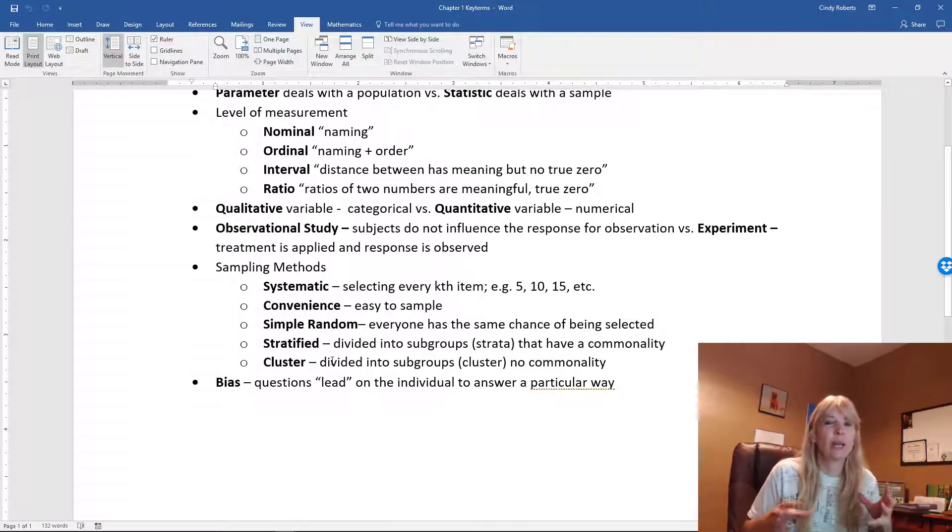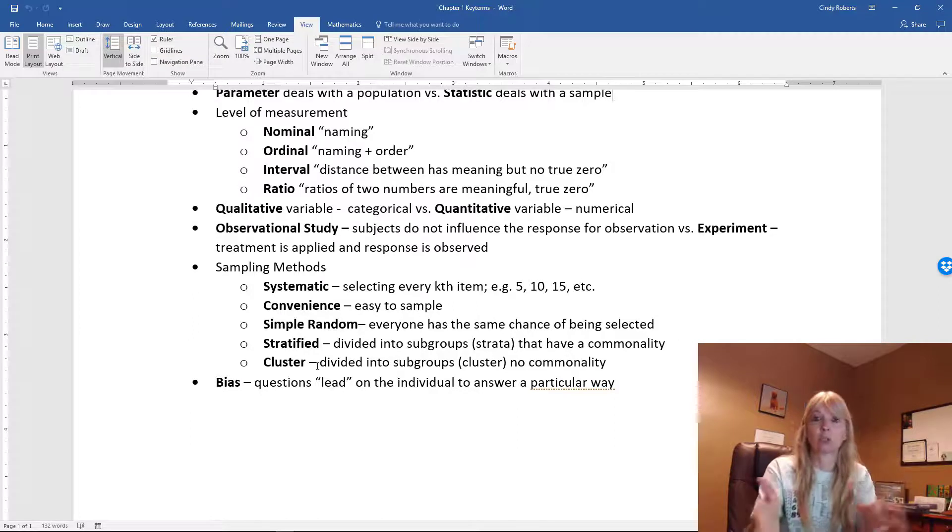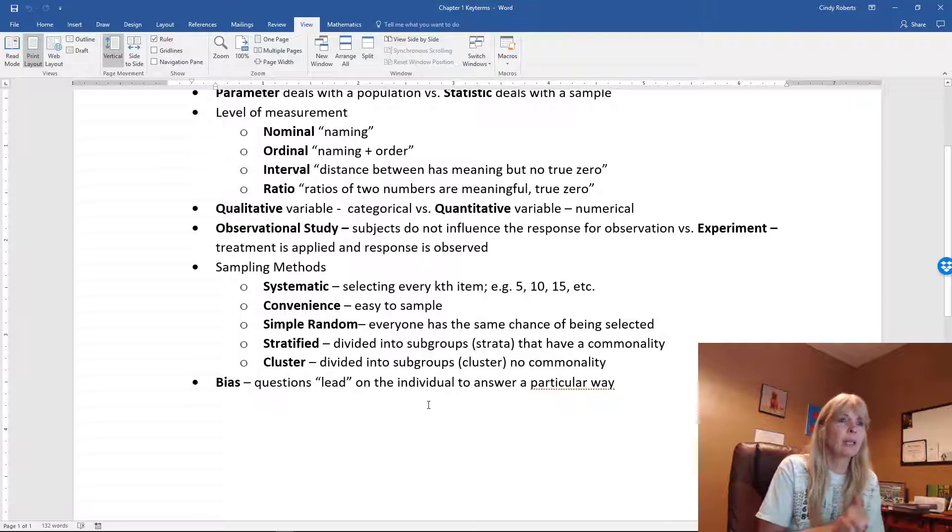Stratified and cluster kind of go together - they're both subgroups. The only difference with stratified is their subgroup has something in common, like male-female, where a cluster is a subgroup but it might just be this group of people here, this group of people here. We didn't select them with anything in common.